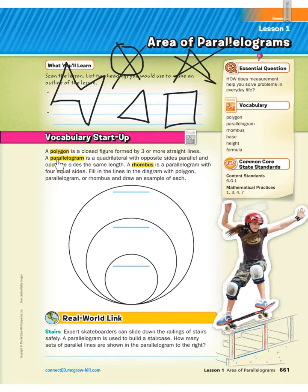Now, a parallelogram is a specific type. It's a quadrilateral, remember quad means four, with opposite sides parallel and opposite sides of the same length. A rhombus is a type of parallelogram with four equal sides. Fill in the lines in the diagram with polygon, parallelogram, and rhombus, and draw an example of each.